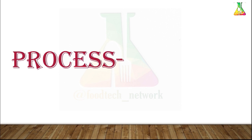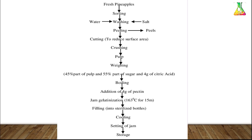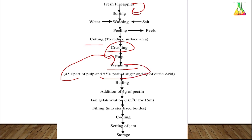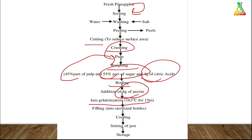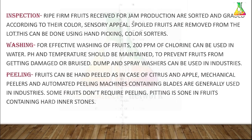Now let's look at the jam manufacturing process in detail using a flowchart for pineapple jam. Fresh pineapples are graded — selecting the best quality and same-size fruits — then washed with chlorine water, peeled using mechanical peelers, cut and crushed to prepare pulp, then weighed. The pulp should be 45 percent, sugar 55 percent, and 4 grams of citric acid. After boiling, 4 grams of pectin is added, then jam gelatinization occurs at 163°C for 15 minutes. The jam is then filled into sterilized bottles, cooled, and stored in a cool dry place.